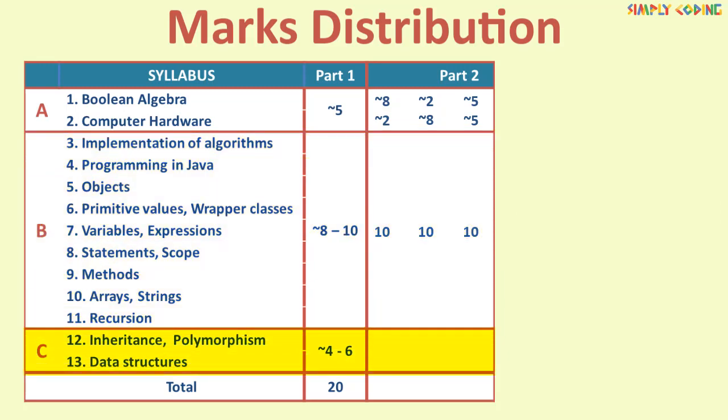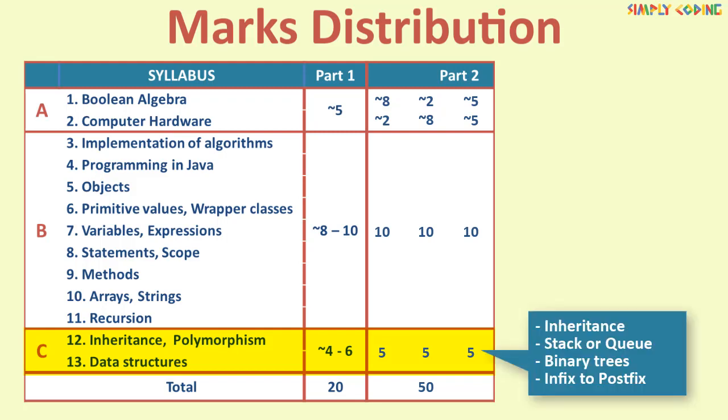Next, in section C, there are 3 questions of 5 marks each and you have to attempt 2. One question is on inheritance. One question is on data structure implementation using arrays which would be either stack or queue now. One question is on binary tree. Since a major portion is deleted from here, there is a possibility that this year they might move the infix to postfix conversion from part 1 to this section.